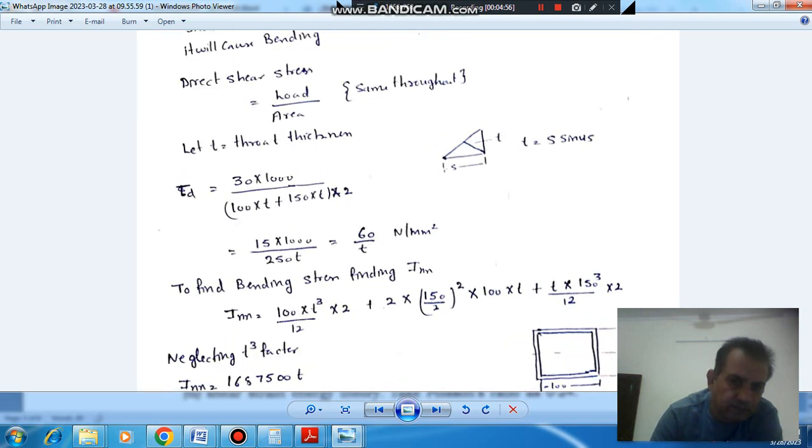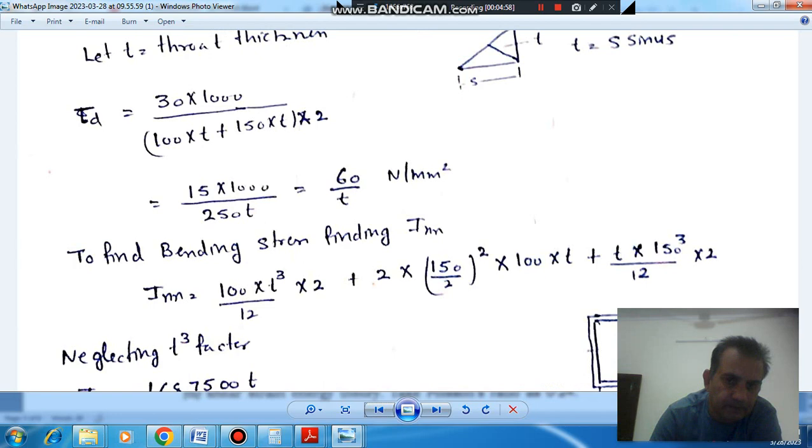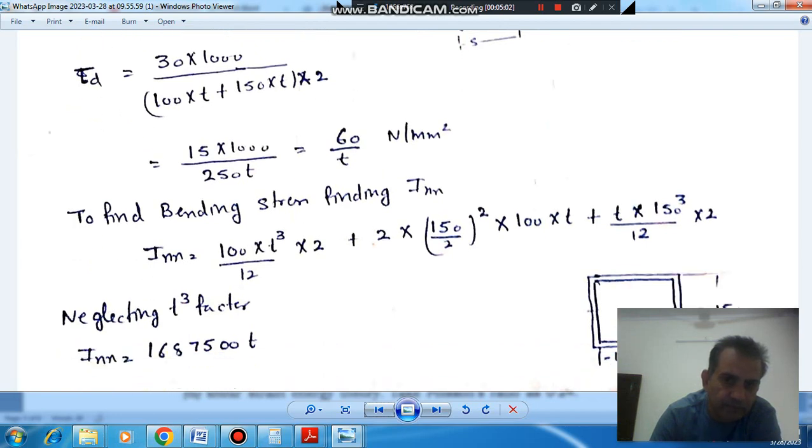So, now this T is very very small as compared to this weld length and weld depth. So, we can omit this T cube effect. So, I X axis comes down here. If we take T to 0, we take this to 10. So, I X axis will come down here. 1,687,500 T.